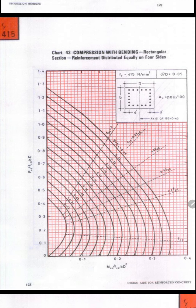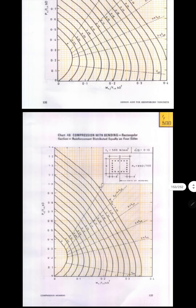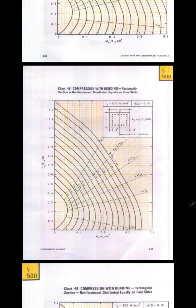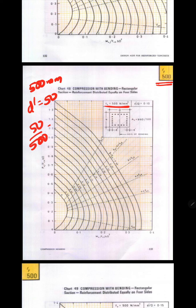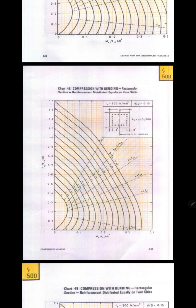For example, if you have Fe 500 grade steel and the column size d = 500 mm and d' = 50 mm, then d'/d = 50/500 = 0.1. If you are planning to provide reinforcement on all four sides, then you need to use chart number 48. Once you have chosen the chart, you calculate Pu / (fck·b·d) and Mu / (fck·b·d²).